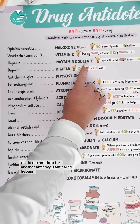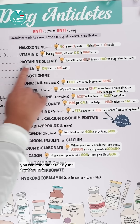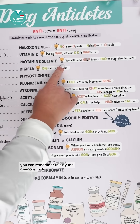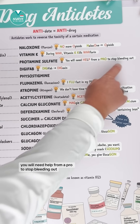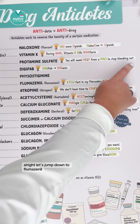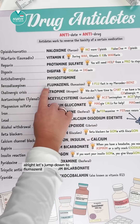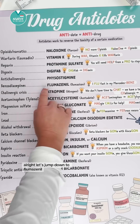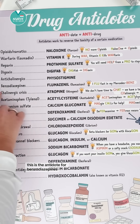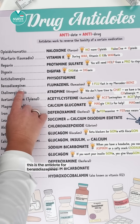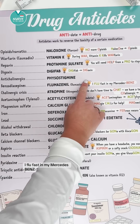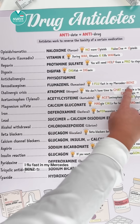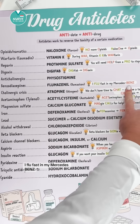Protamine sulfate is the antidote for another anticoagulant called heparin. You can remember this by the memory trick: 'you will need help from a pro to stop bleeding out.' Alright, let's jump down to flumazenil. This is the antidote for benzodiazepines. You can remember this by the memory trick: 'I flew fast in my Mercedes Benz.'